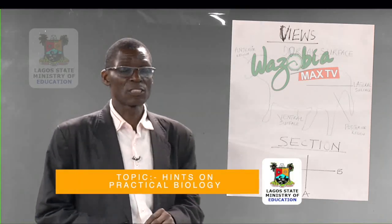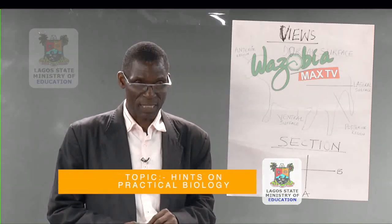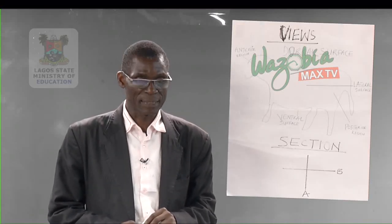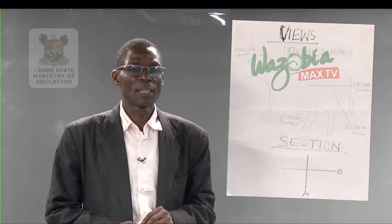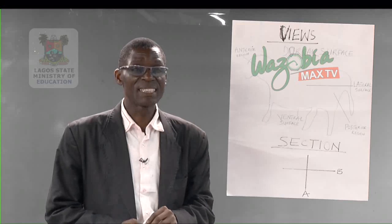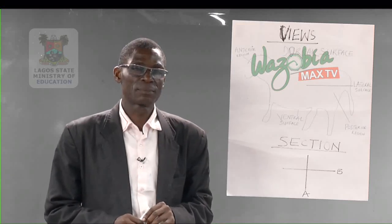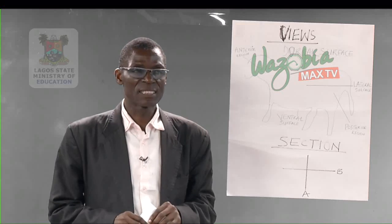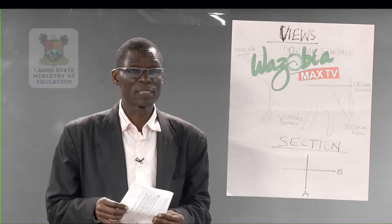Biology as a subject requires two papers to be taken. The first paper is called paper one, which is the practical, and paper two is theory and objective. The marks allocated to practical biology is 80 marks, which shows the importance of this paper. Students need to equip themselves in order to do well in this aspect of biology.